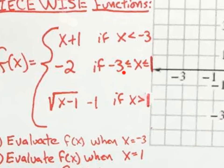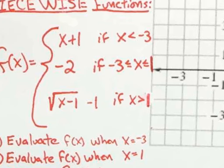It is the middle piece that we're going to use, because negative three really is greater than or equal to negative three. And negative three is definitely not greater than one. So we're using the middle one, and when you think about plugging in negative three, there's nothing to plug it into, so your answer is negative two. For number one, the answer is negative two.